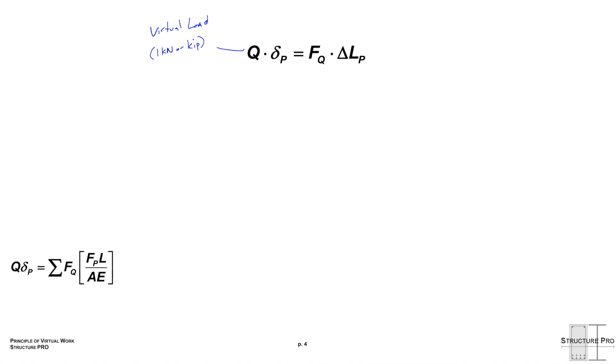So if you blink too fast you'll miss it, but we actually just wound up with a meaningful equation. So let's take a look at that. We have our Q virtual load, which is generally chosen to be one kilonewton or kip, and our real displacement delta P, the value we're after. And we multiply those two together. This equation is telling us that's equal to our member force due to our virtual load Q, or FQ, times delta LP, the real deformation. And this real deformation we know it's real because it has a subscript P. Everything with the P's is real. Everything with the Q's is virtual.